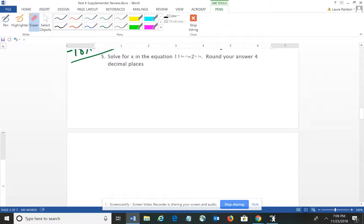Okay, we're picking up with the supplemental review for test number 4, question number 5. It asks us to solve for X in the equation 11 raised to the 4X minus 7 equals 2 to the 5 minus 3X. Round your answer to 4 decimal places.